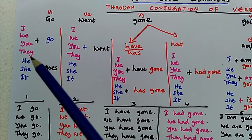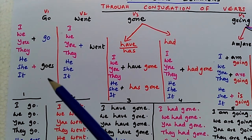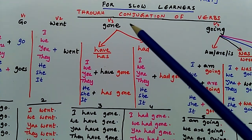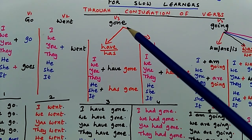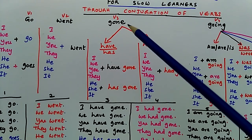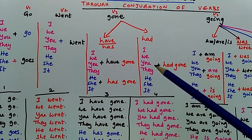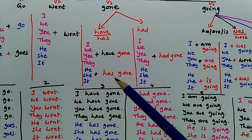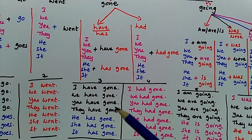For verb one and verb two, just adding I, we, you, they, he, she, it we can get the tables — but with verb one we need to be a little careful by adding the S form for he, she, it. For verb three, we cannot directly add pronouns. We need to add the words have, has, and had. With have and has we get one table; with had we get another. Have is used with I, we, you, they, and has is used with he, she, it.